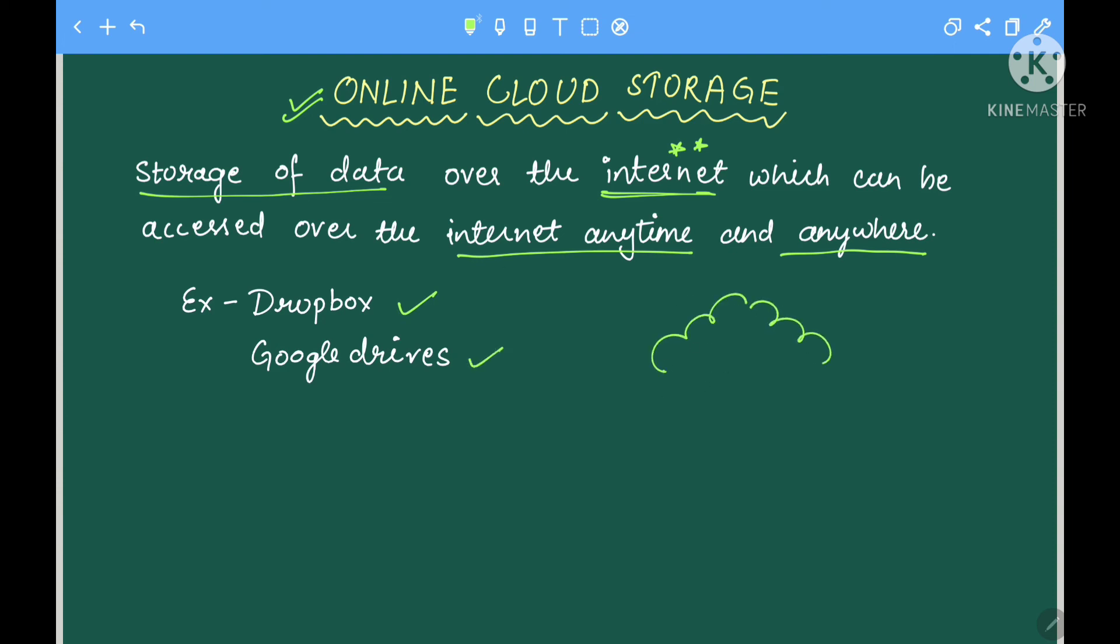We call these storage areas clouds. You might have heard about cloud computing - this is computing that relates to online storage areas. This type of storage includes clouds like Dropbox and Google Drive.